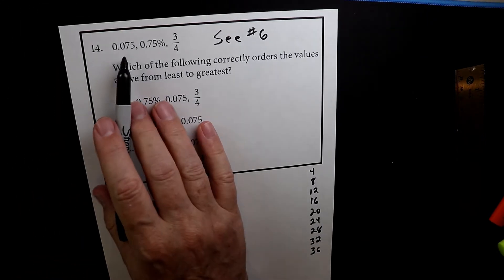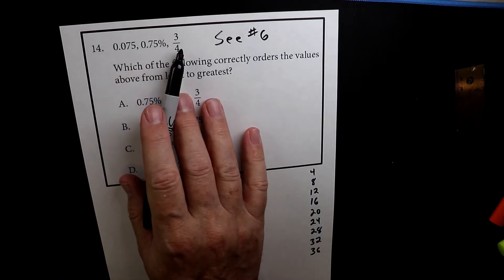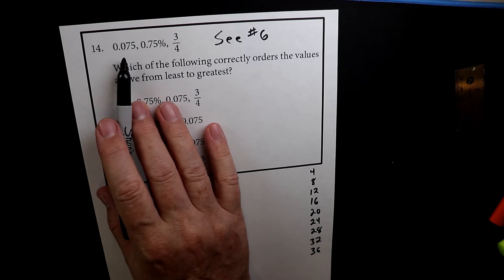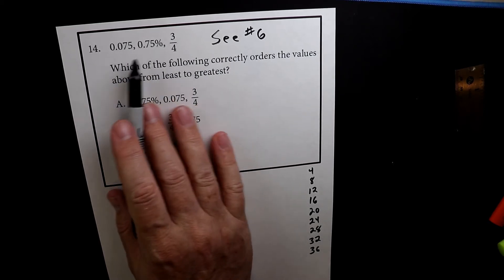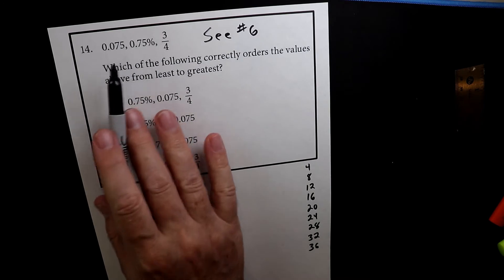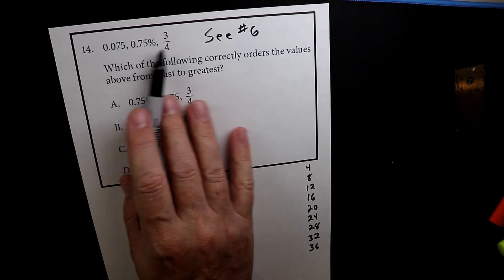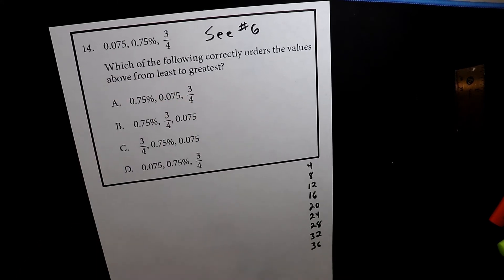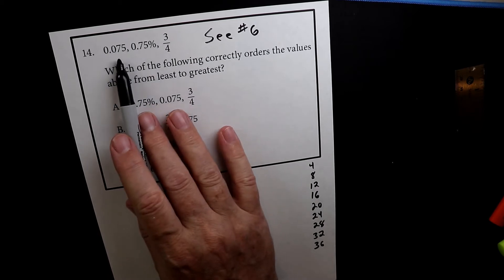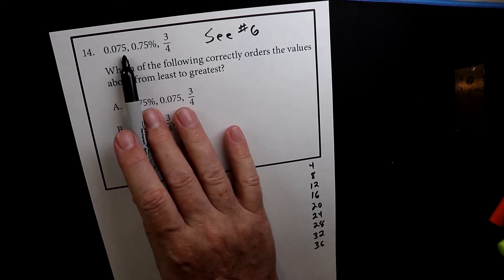So I want to convert each of these into a decimal. Now I guess I could do them into fractions or all into percentages, but let's do it into decimals because I think that's the easiest to do it quickly. So what I want to do is this one's done. So we don't have to do anything to that one.